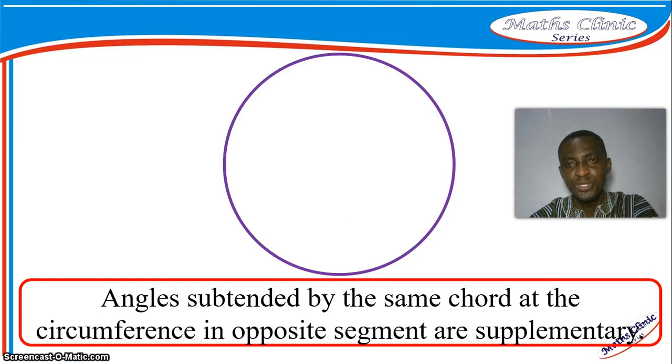Hello, I want to use this video to demonstrate that angles subtended by the same chord at the circumference in opposite segments are always supplementary, or they add up to 180 degrees. So this is our chord, and when a chord is drawn, we create two areas in the circle.